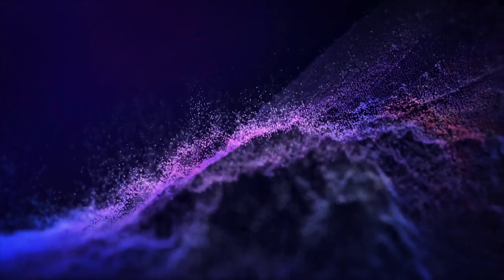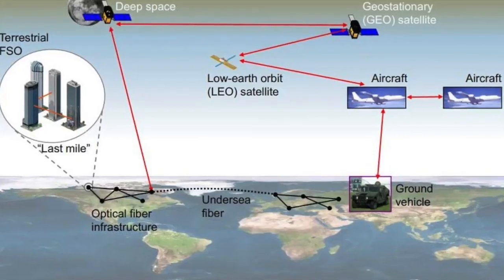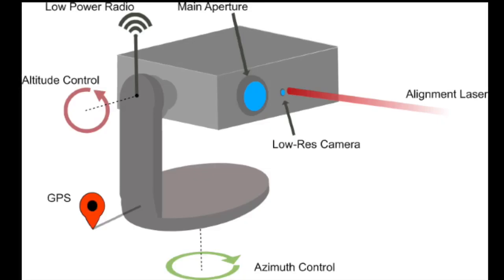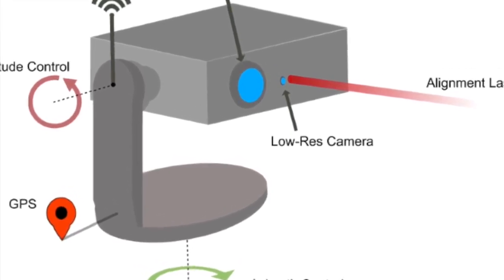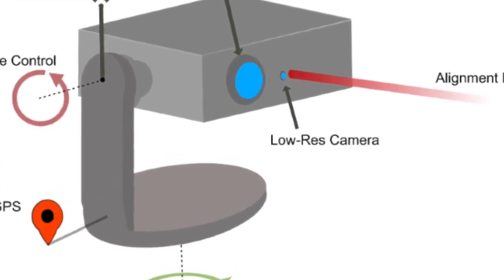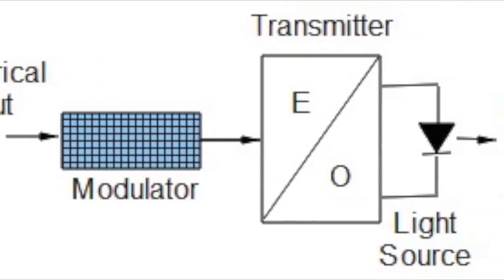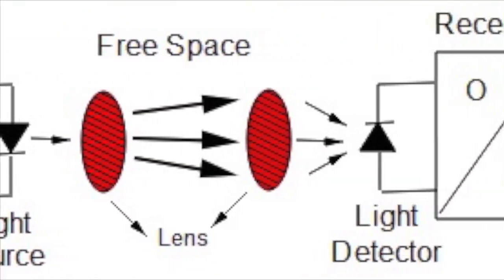FSO uses air, outer space, vacuum, or something similar to wirelessly transmit data for telecommunication and computer networking. Currently, FSO is capable of up to 2.5 Gbps of data, voice, and video communications through the air, allowing optical connectivity without recovering fiber optic cable or securing spectrum licenses.